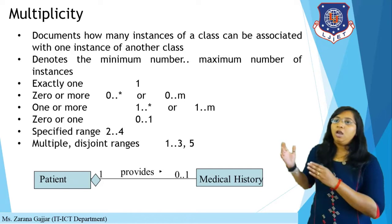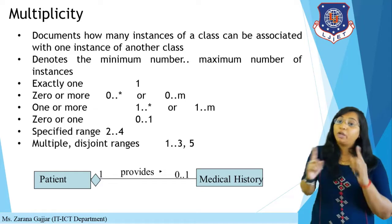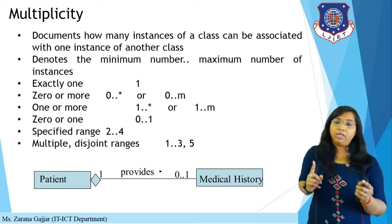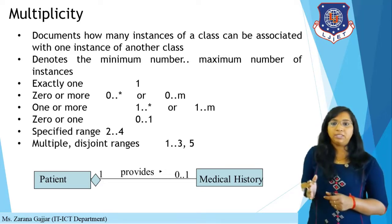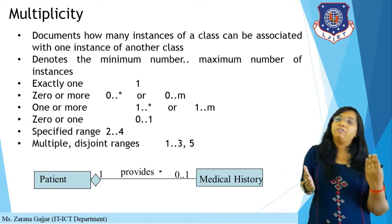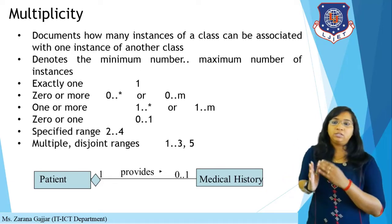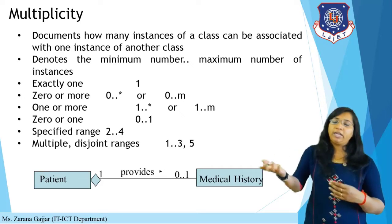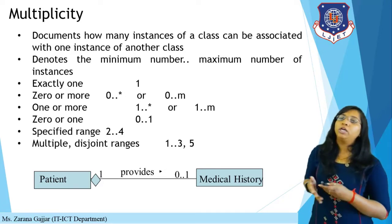In the example, a patient can have one-to-one or one-to-zero relationship with medical history. One patient has one medical history, or one patient may have zero medical history. Exactly one means one patient, one medical history. Zero or more means a patient has no medical history. One or more means a teacher has multiple students. This is all about multiplicity.